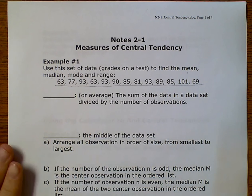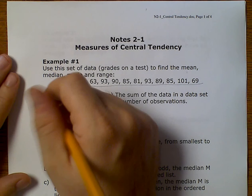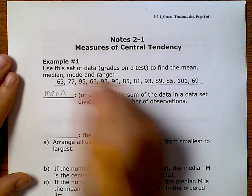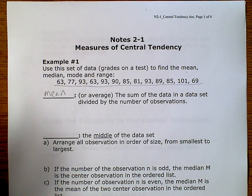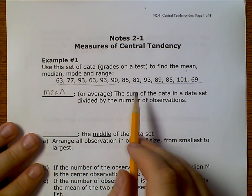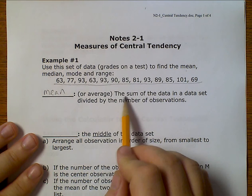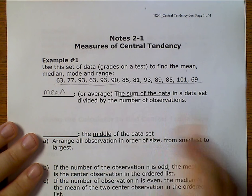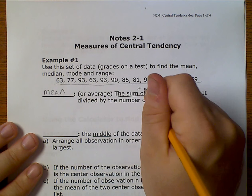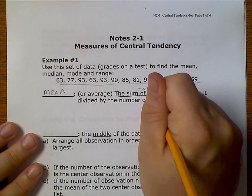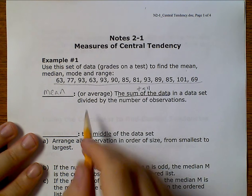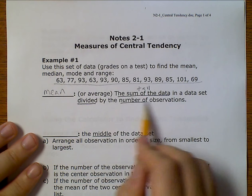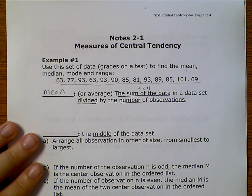The first thing we're going to find is the mean. This is the average. What I need to do is find the sum of the data — that means add them all up — and then divide by the number of observations, or how many numbers we have.